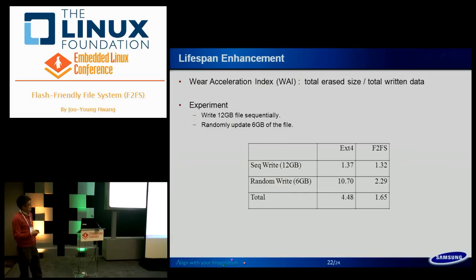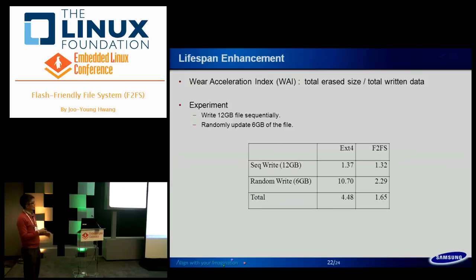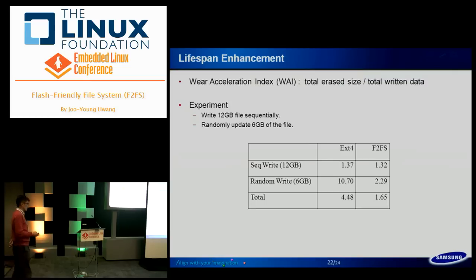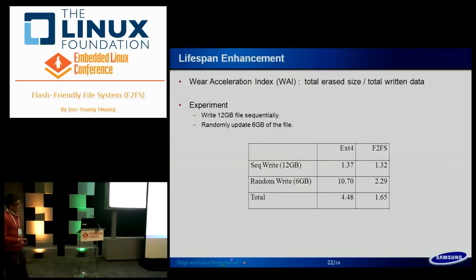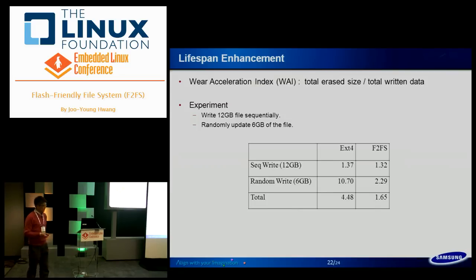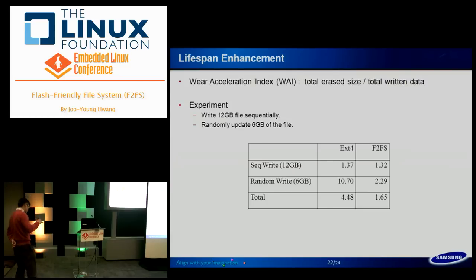For lifetime enhancement, we tested sequential and random write workloads mixed together and measured the Write Amplification Index, defined as total erase size per total written data — lower is better for lifetime. F2FS has a very low write amplification value. By comparison, in the random write case, ext4 has more than 10x write amplification. In practical cases the lifetime benefit may be less than this synthetic workload, but we still think F2FS has less than 2x write amplification, which is very good for flash storage lifetime.